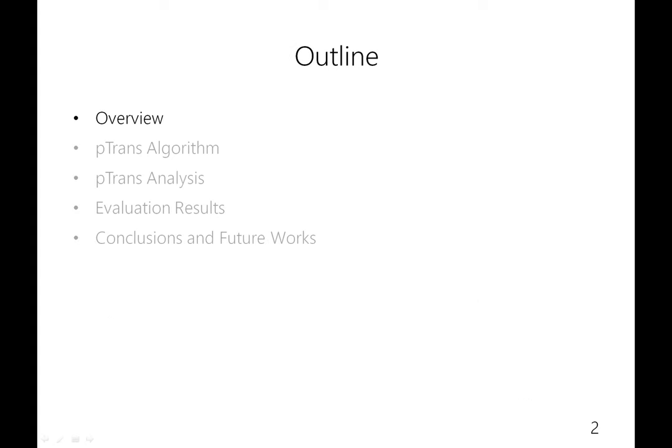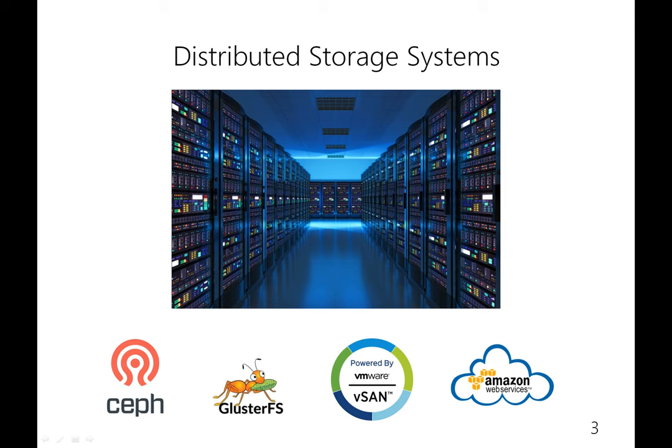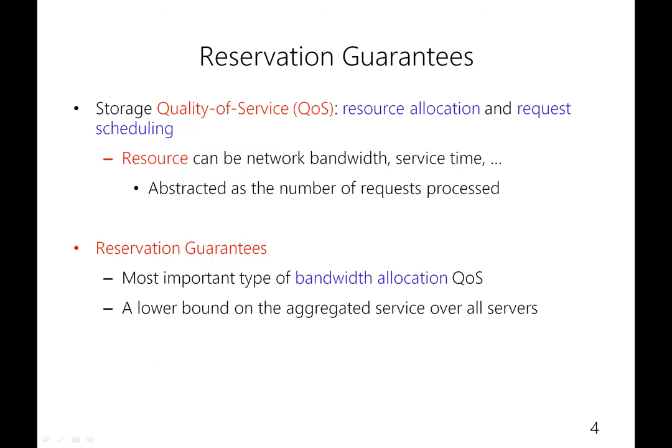Let me begin my talk by giving an introduction. Nowadays, distributed storage systems have become popular in order to efficiently handle the increasing size of application datasets. Examples of these systems include CEPH, GlusterFS, VMware VSAN, and Amazon AWS. So providing quality of service, also known as QoS, is an important feature of distributed systems.